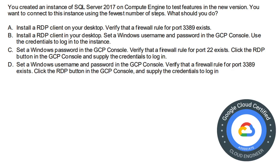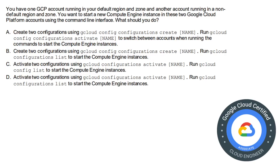Moving on to the next question. You created an instance of SQL Server 2017 on Compute Engine to test features in the new version and want to connect to this instance using the fewest steps. The correct answer is option B: install the RDP client on your desktop, set a Windows username and password in the GCP console, and use those credentials to log into the instance.